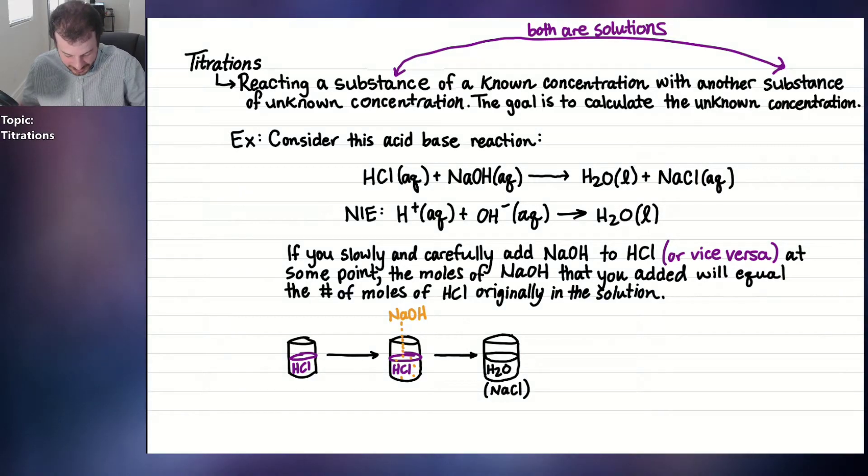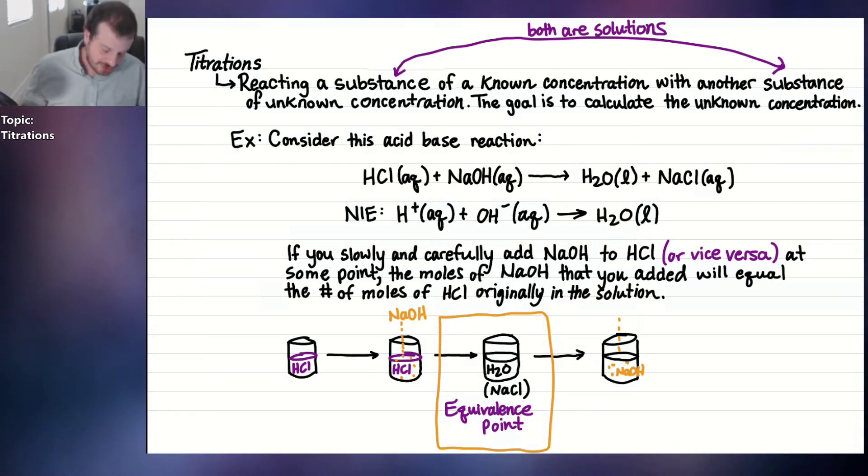But that is what we call the equivalence point. And that is a golden point, a magical point. That is a point that we are trying to find in a titration. We want to take a flask with HCl and add NaOH to it until all the HCl is just reacted with the NaOH, the perfect one to one ratio. If you keep adding NaOH past the equivalence point, there'll be NaOH inside of the flask but no HCl left. So our goal is to stop at the equivalence point because that's going to give us information about how many moles of HCl was originally present.